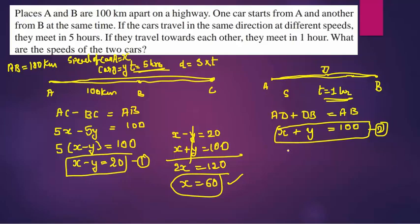If x equals 60, then from x plus y equals 100, we get 100 minus 60 equals 40, so y equals 40. Speed of car A is 60 kilometers per hour and speed of car B is 40 kilometers per hour.